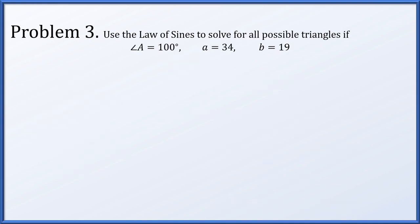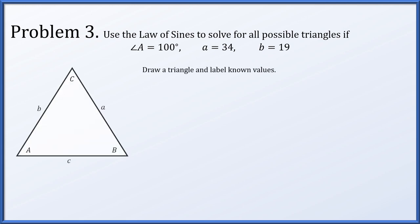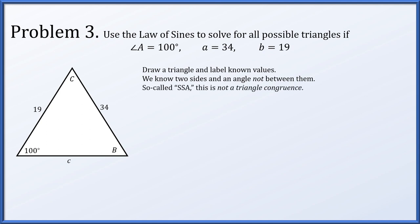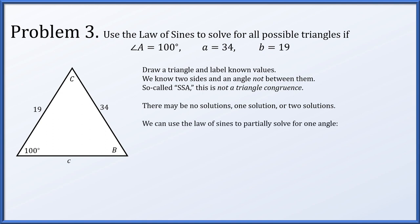In problem three, we'll use the law of sines to solve for all possible triangles given that angle A is 100°, side length a is 34, and side length b is 19. We draw a triangle and replace all the known values. We now know two sides, but the angle we know is not in between them — that's called side-side-angle. It's not a triangle congruence, meaning there might be no solutions, one solution, or possibly two different solutions.